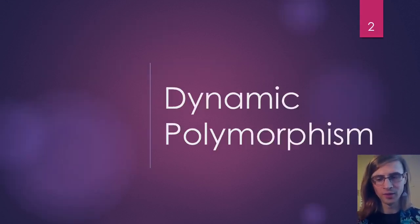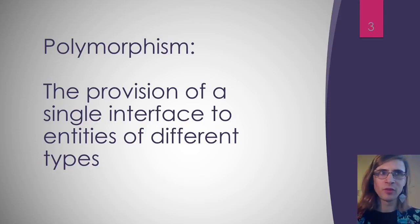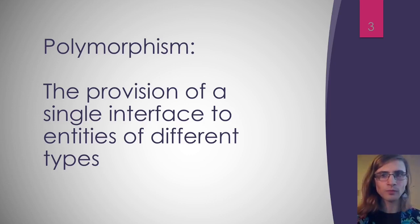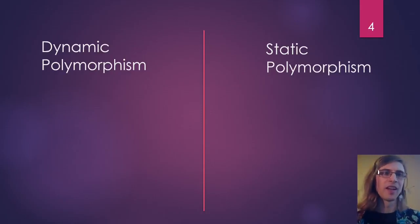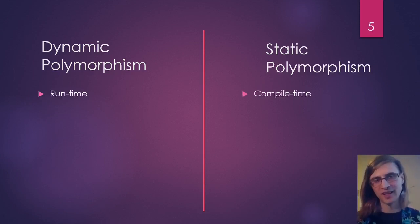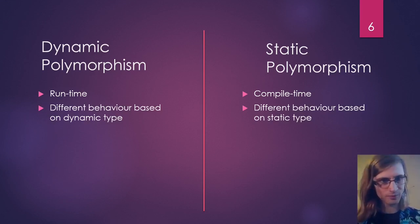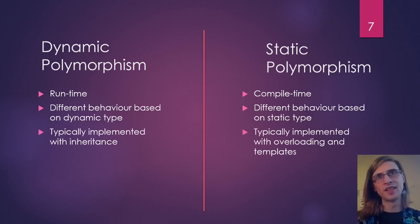For those who aren't familiar with this term, some definitions. Polymorphism itself is the provision of a single interface for entities of different types — you have one interface you program to and that gives you different behavior depending on the types. The two types we're concerned with today are dynamic polymorphism and static polymorphism. Dynamic polymorphism is at runtime and static is at compile time. Dynamic polymorphism gives you different behavior based on your dynamic type, and static on the compile-time type. In C++, dynamic polymorphism is mainly done with inheritance, and static polymorphism with overloading or templates.